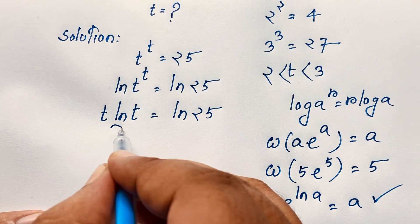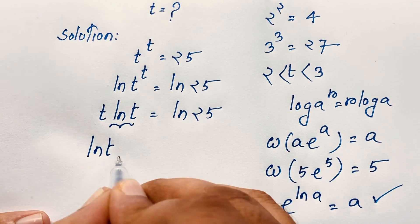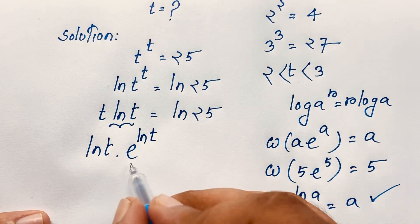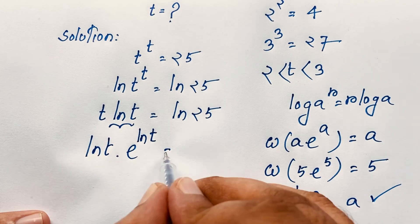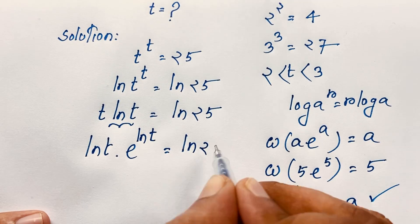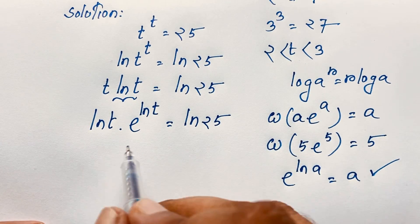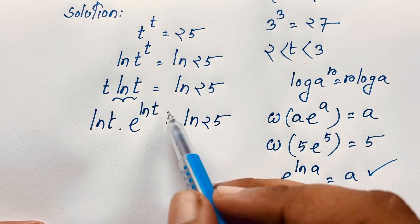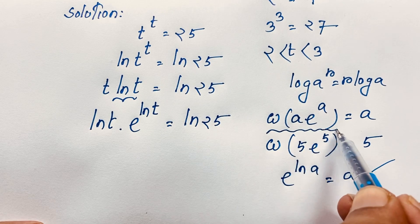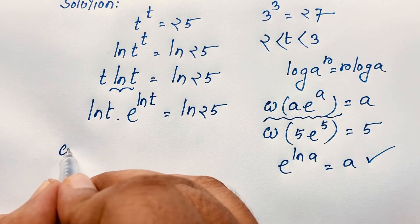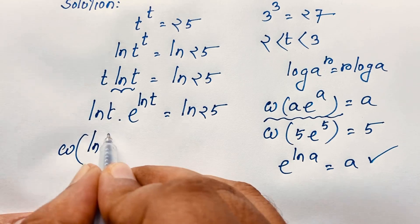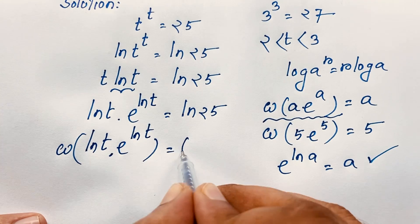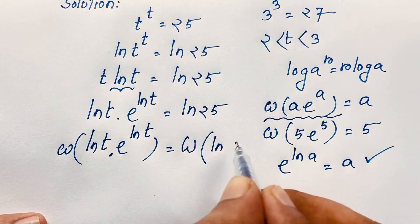I take ln(t) here. This t can be written as e to the power of ln(t), since we know e^(ln t) = t. So the equation becomes: ln(t) · e^(ln t) = ln(25). Now I apply the Lambert W function to both sides, because the base and exponent match the required form. So: W(ln(t) · e^(ln t)) = W(ln 25).